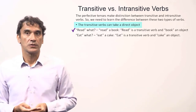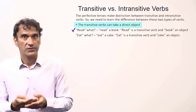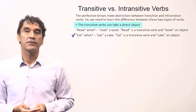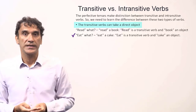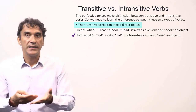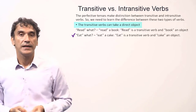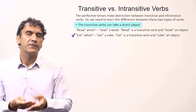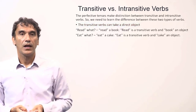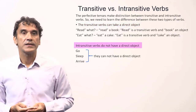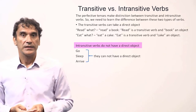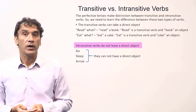Read what? Read a book — so 'read' is a transitive verb. Another example: the verb 'eat.' You can ask 'eat what?' The answer could be: eat a cake, eat a samosa. That means the verb 'eat' is also a transitive verb. On the other hand, intransitive verbs cannot take a direct object — the question 'what?' does not apply to them.